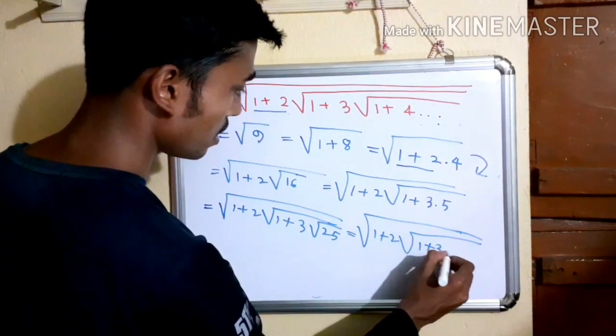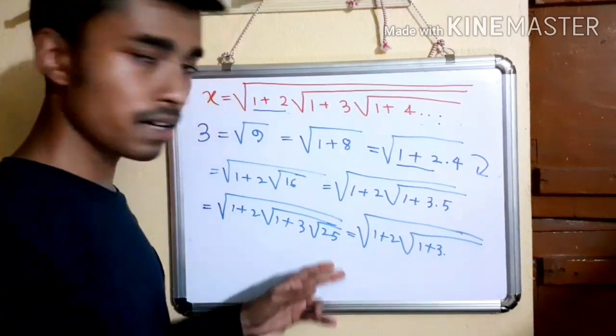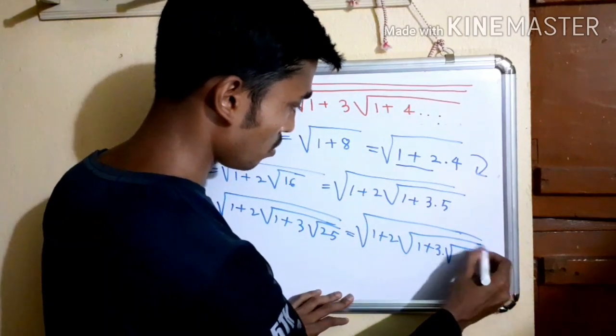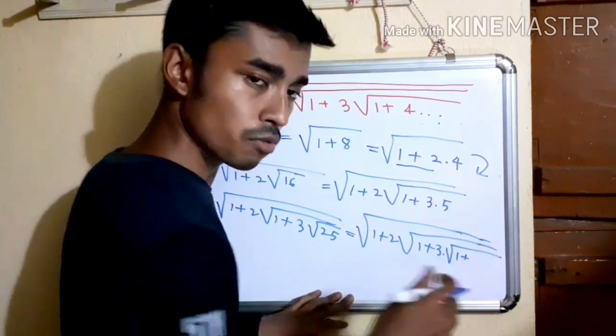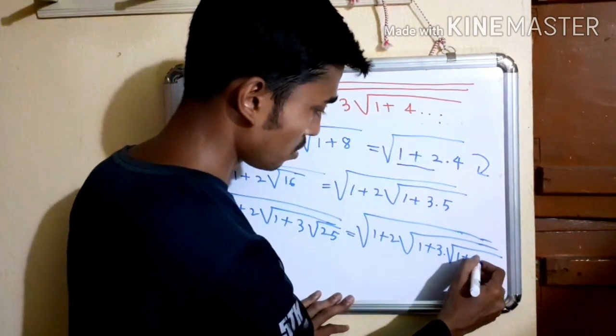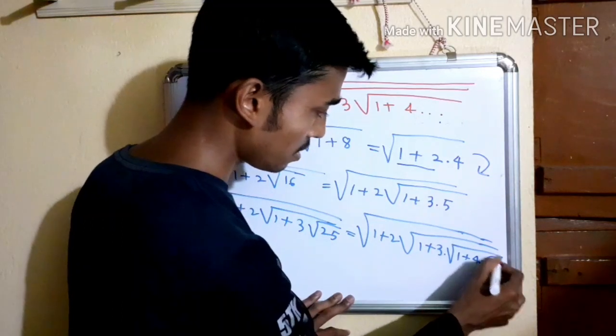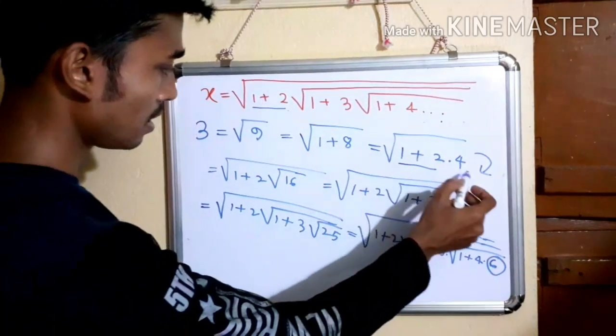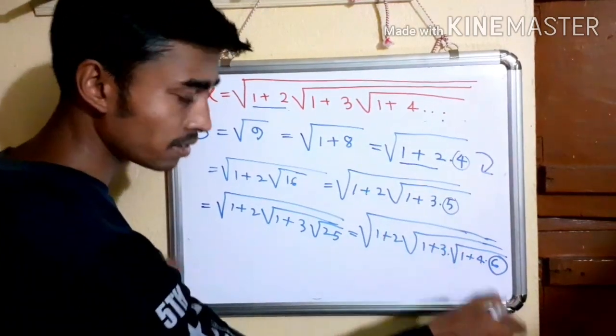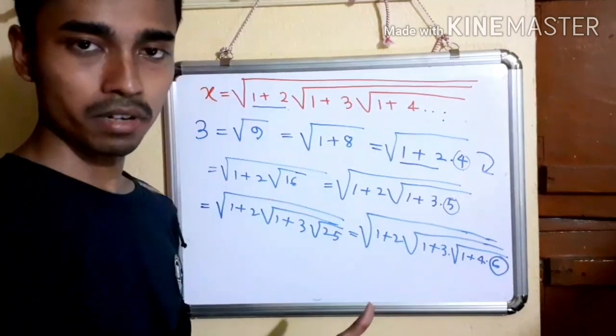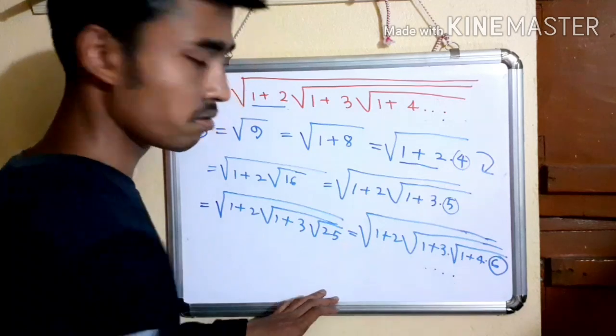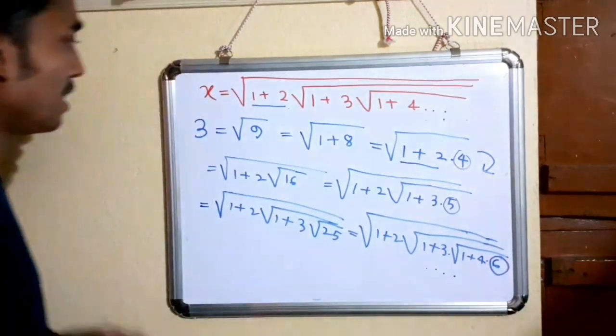1 plus 3 into what is 25? 1 plus 24. But we can write 24 as 4, this means 4 into 6. First it was 4, then it is 5, and now 6, 7, 8, and so on. This is how the thing goes on. I have to keep some dots over it - it goes on infinitely.